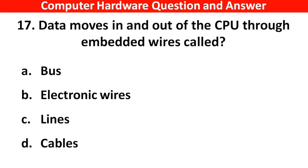Data moves in and out of the CPU through embedded wires called — the right answer is Option A: Bus.